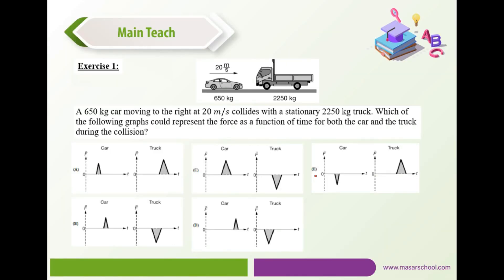Exercise 1: a 650 kg car moving to the right at 20 m/s collides with a stationary 2250 kg truck. Which graph could represent the forces as a function of time for both the car and the truck during the collision? The curves should be along the same time interval, inverted, and equal in area — which makes C the correct choice.